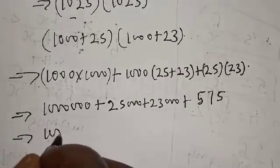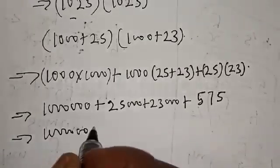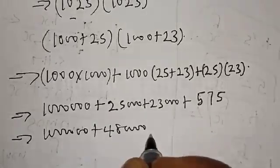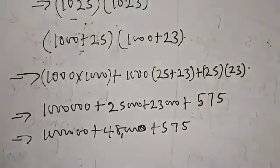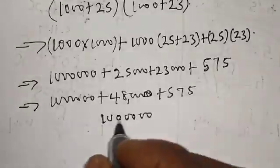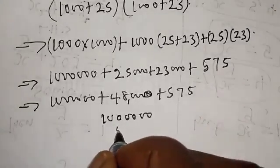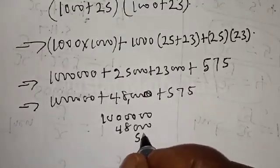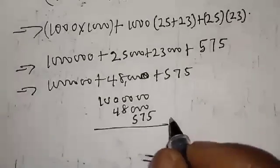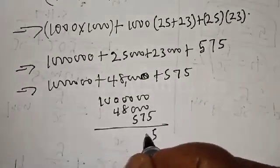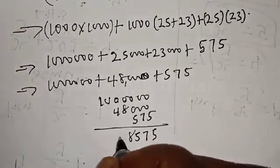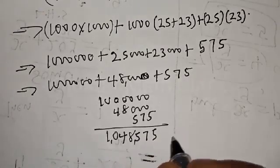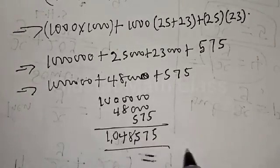This gives us 1 million plus 48,000 plus 575. Let's add everything together: 1 million, plus 48,000, plus 575. If you add everything together we have 5, 7, 5 — 8, 4, 0, 1. Therefore our final answer is 1 million and 48 thousand 575.